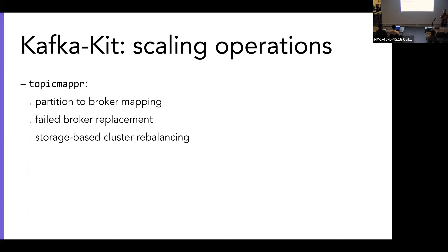Kafka has a generation tooling to help you, but it won't help in certain situations. For example, if you want to scale out your cluster smartly because you have unbalanced partitions — some bigger than others — Topic Mapper helps with that. It has an option called storage placement that uses metrics. In our case it fetches them from DataDog, but you're not locked in — you can use any metrics provider, like local Prometheus. It will look at partition sizes and bin-pack the partitions on your cluster to avoid hot brokers and cold brokers.